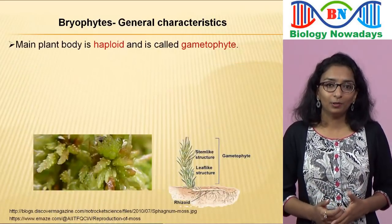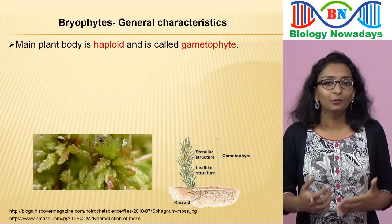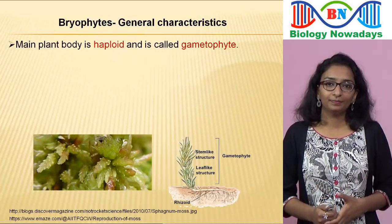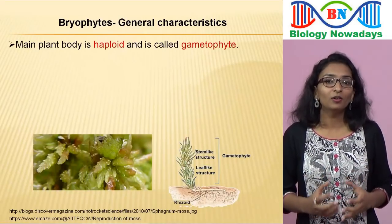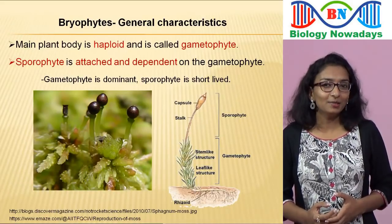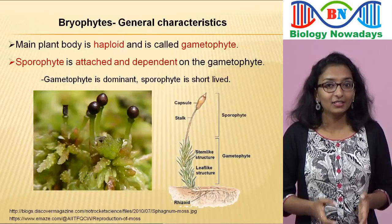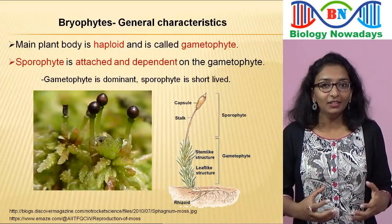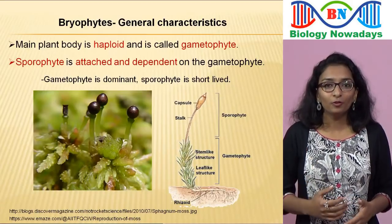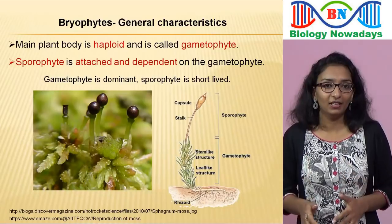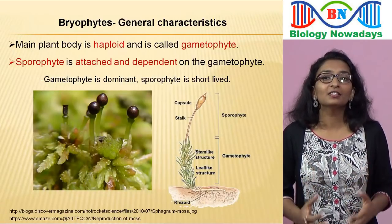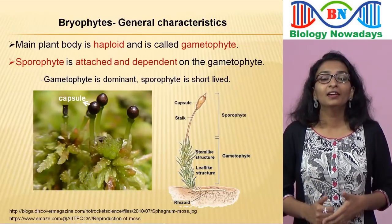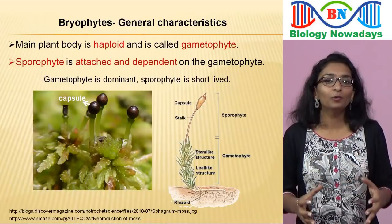The main plant body of the bryophyte is haploid and is called a gametophyte because it produces male or female gametes. When the male and female gametes fuse, a zygote is formed. The zygote forms a multicellular body called the sporophyte, which forms spores. The haploid gametophyte is dominant, long-lived, green and independent. Whereas the diploid sporophyte is short-lived, attached and nutritionally dependent upon the gametophyte. The sporophyte consists of a foot, a stalk called the seta, and a capsule or sporangium where the spores are produced.